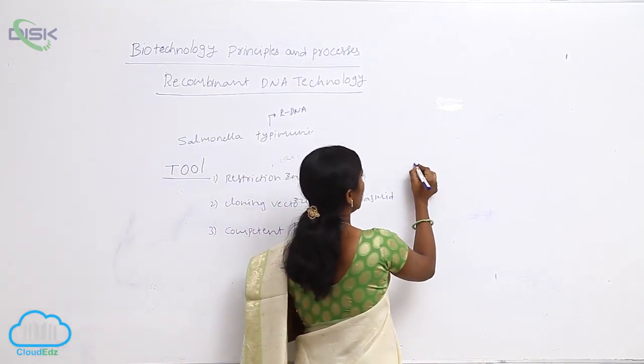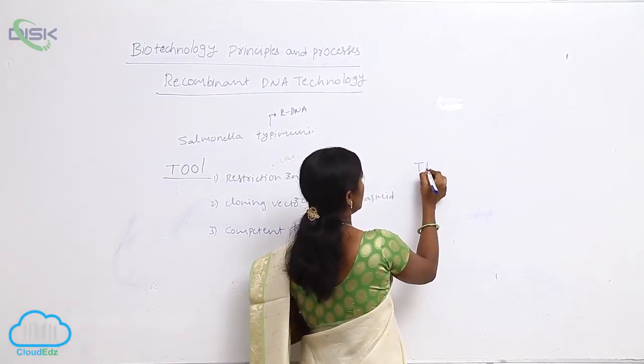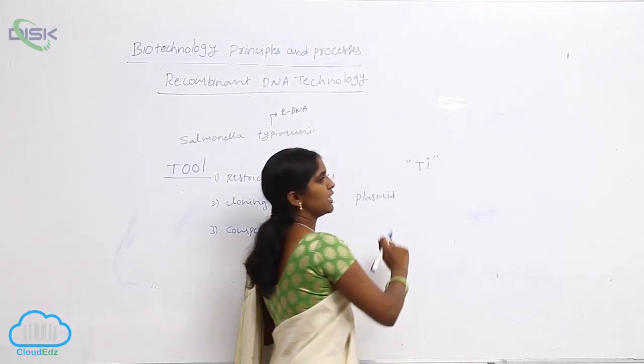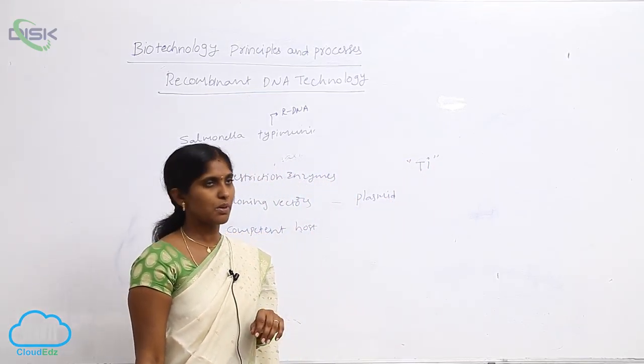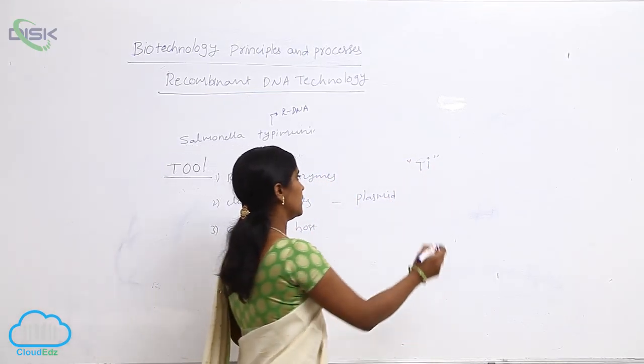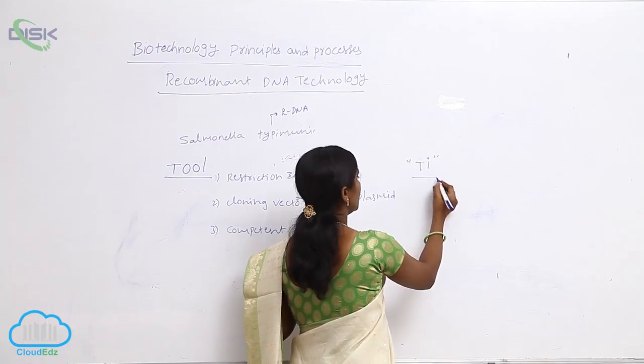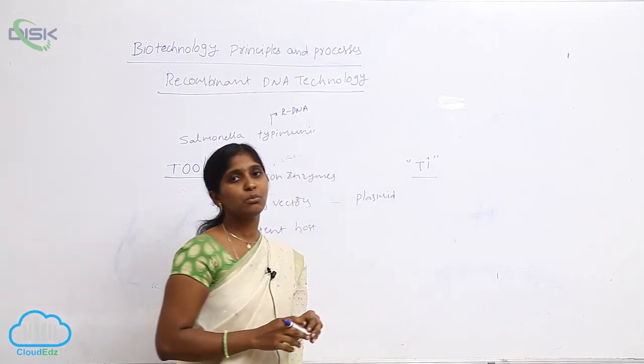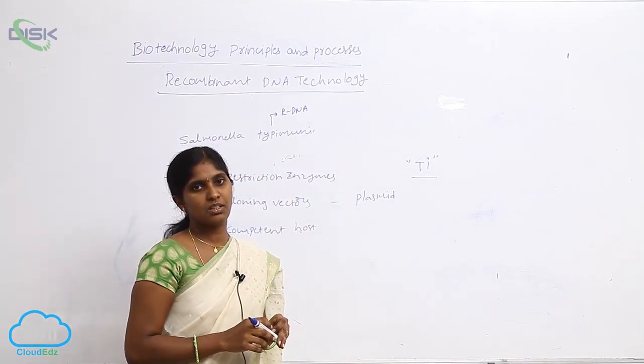The Ti plasmid is also there. Ti plasmid is tumor-induced plasmid, and it is isolated from Agrobacterium tumefaciens.